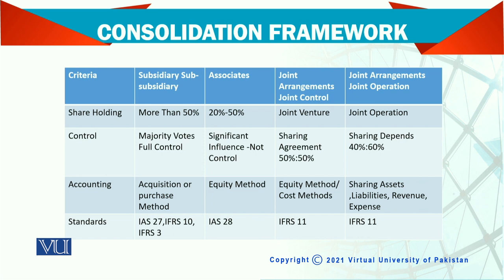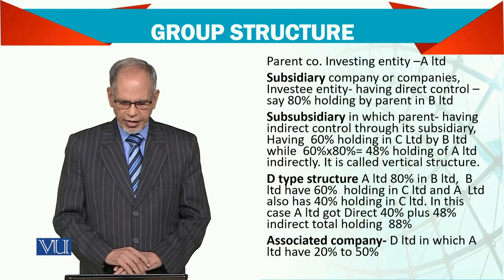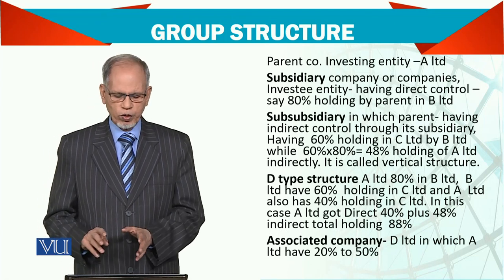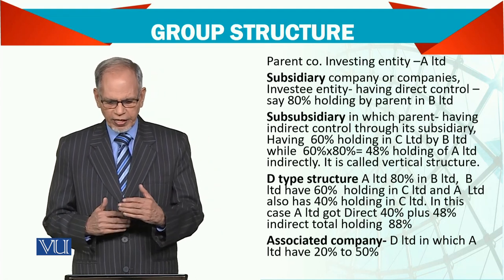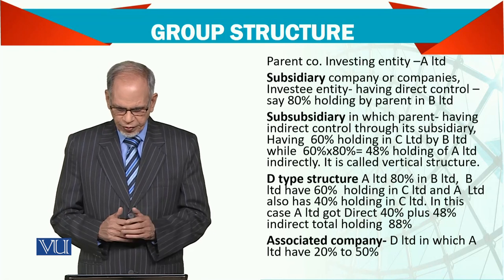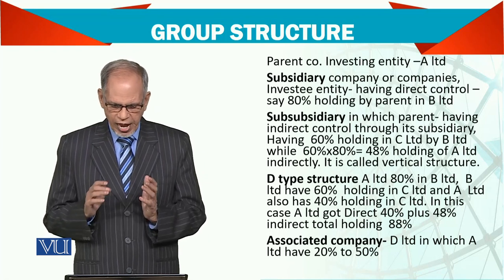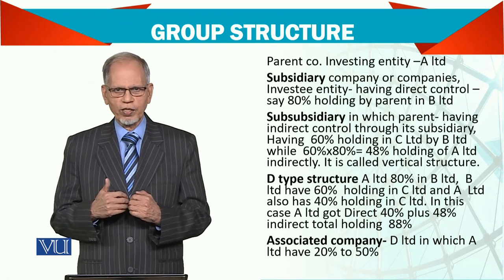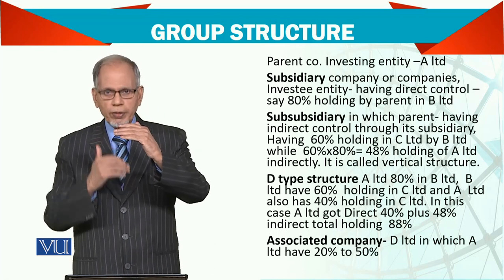The parent company is basically the investing company. The subsidiary company is the entity in which the parent has direct control — say 80% holding. If the parent has 80%, 75%, or more than 50% control, that other company is a subsidiary. There is also a sub-subsidiary, where the parent has indirect control through the subsidiary. This forms a vertical group: parent company, subsidiary company, sub-subsidiary company.